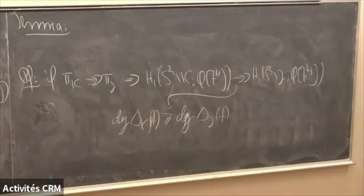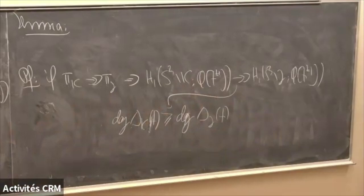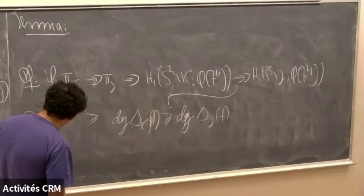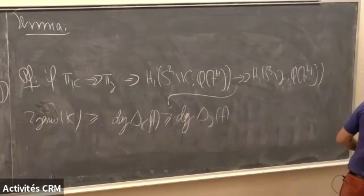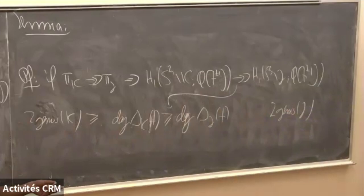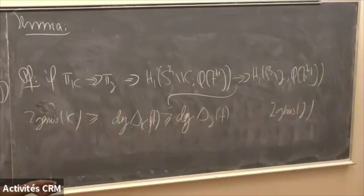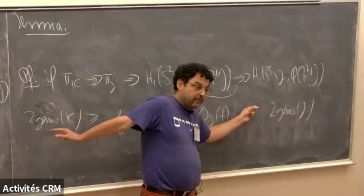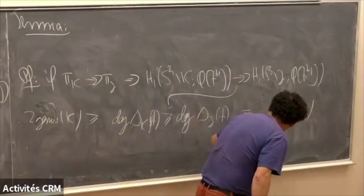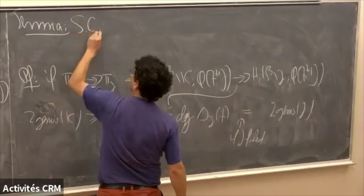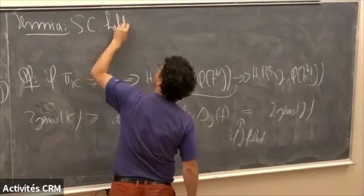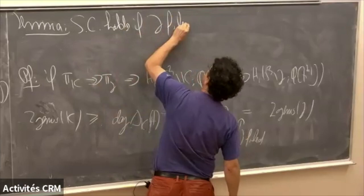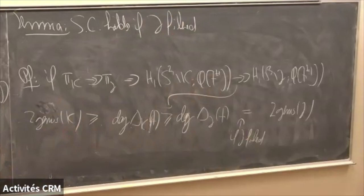So we have the inequality: degree of Δ_K ≥ degree of Δ_J. We also know degree of Δ_K ≤ 2·genus(K). Now we would like to put 2·genus(J) here as well. But ChatGPT's error was claiming that we always have equality: degree of Δ_J = 2·genus(J). We know this equality holds only if J is fibered. So the lemma gives: if J is fibered, or more generally if the Alexander polynomial of J determines the genus (e.g., if J is alternating), the conjecture holds.